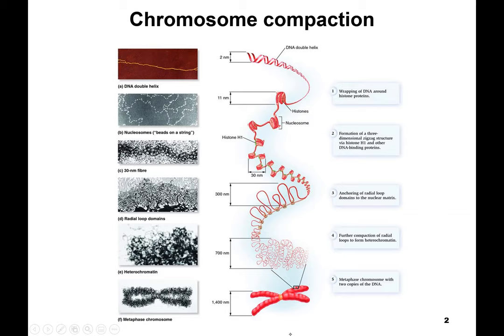Let's remind ourselves about how chromosomes are made, or what they are. Technically, chromatin is your DNA plus proteins. We've previously talked about how proteins, such as histones, help organize the long strands of the double helix DNA and compact them, because if you think about it, if you had a big long string moving around in the cell, it could easily get tangled. So DNA is wrapped around these histone proteins, making something called a nucleosome.